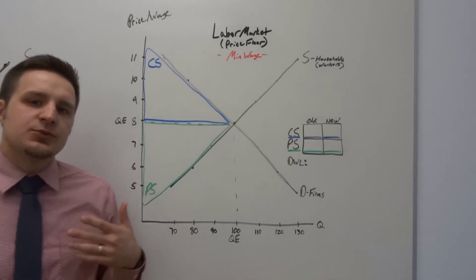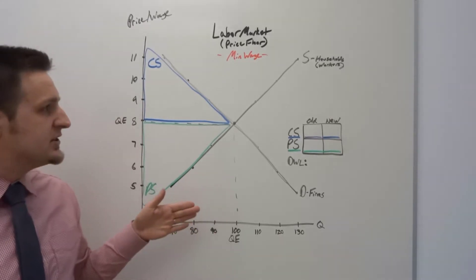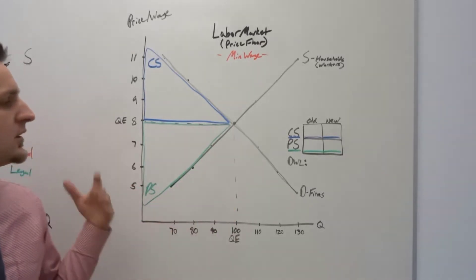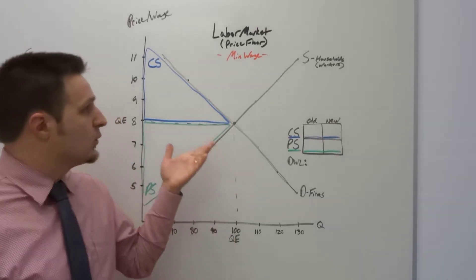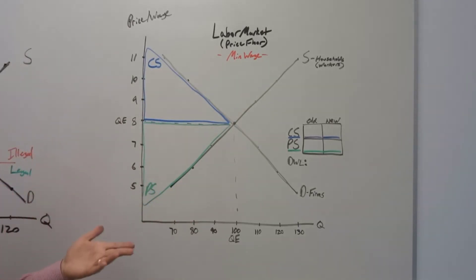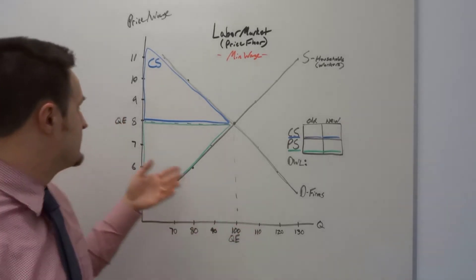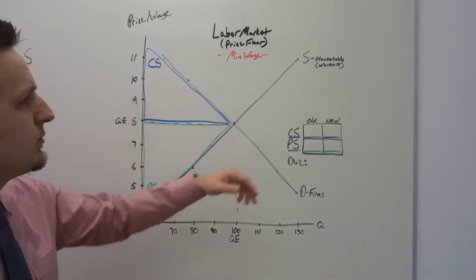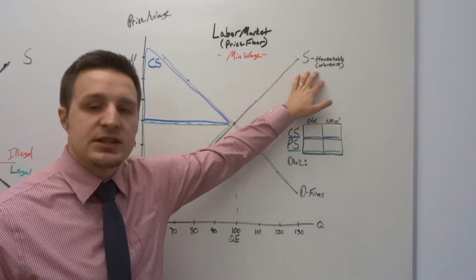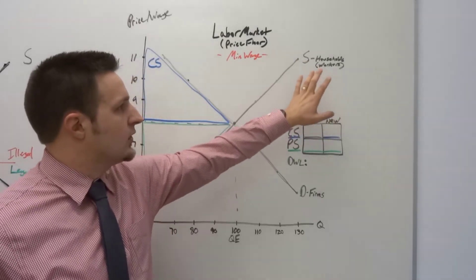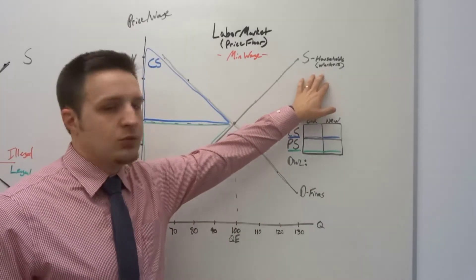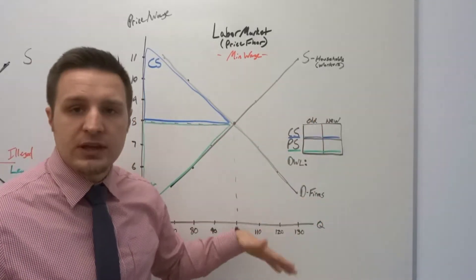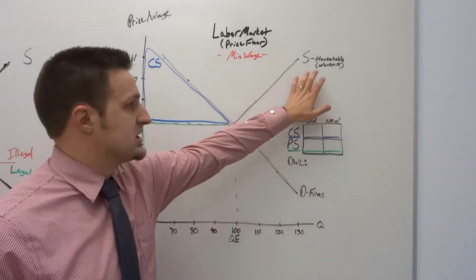Now let's talk about the price floor — another type of price control. Instead of an artificial maximum price, we're talking about an artificial minimum price, meaning you can't charge below this particular price. The most common types of price floors are controls on wages, or minimum wage laws. We'll demonstrate a minimum wage imposed on a market with an equilibrium wage of $8 per hour and an equilibrium quantity of 100 units. In this resource market, the suppliers are the households or workers; the demand comes from firms who demand those workers.